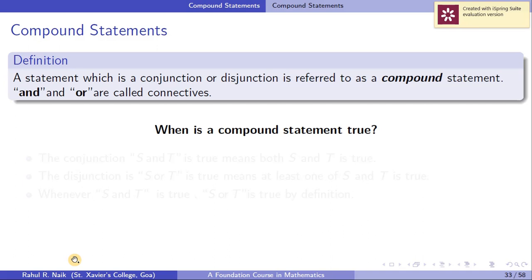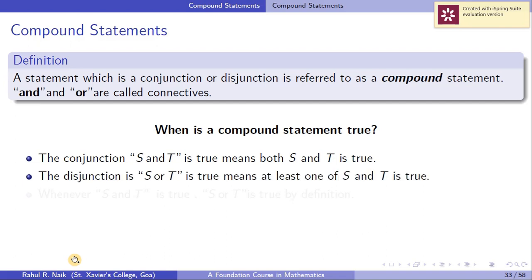The terms 'and' and 'or' have particular meanings in mathematics. For a conjunction S and T to be true, both S and T have to be true. For a disjunction S or T, at least one of S and T has to be true. Whenever S and T is true, S or T is obviously also true, because both being true means at least one is true — so S and T implies S or T.